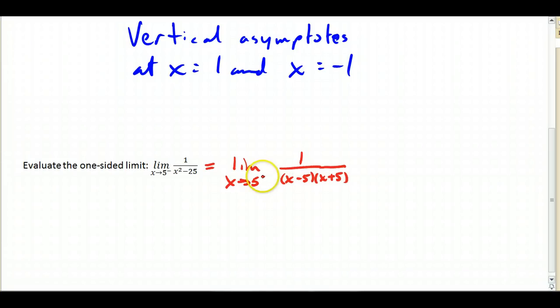Let's pick a number that's to the left of 5, say 4. So, let's plug in 4, and I'm going to get 1 over 4 minus 5 times 4 plus 5, which is 1 over a negative factor times a positive factor, and if I multiply that together, I will get a negative result. So, that means that this is approaching negative infinity.